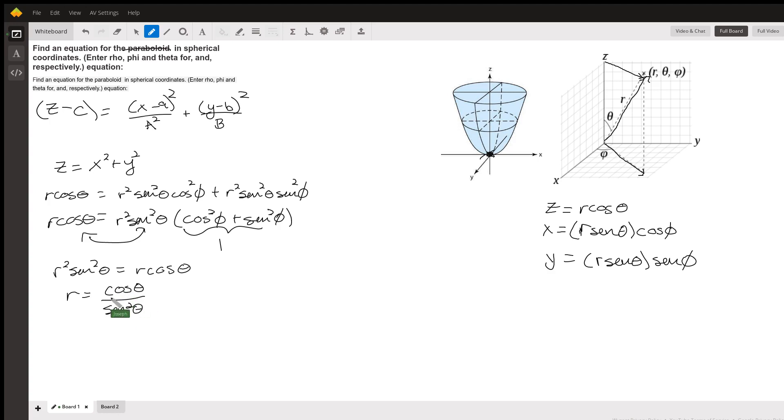You could maybe potentially leave it like that, but I like to not have any trigonometric functions in the denominator. So what I'm going to do is move one of these sines out so it'll be r equals cotangent of theta secant squared of phi.